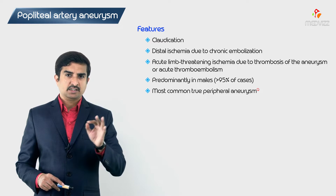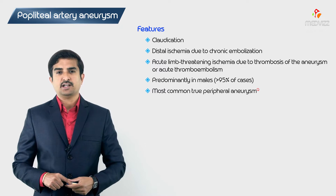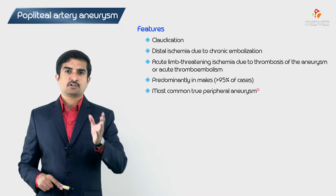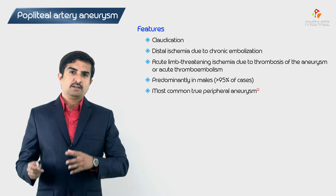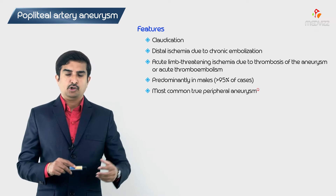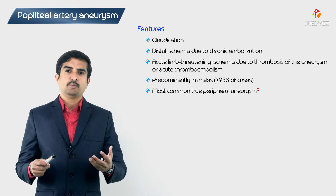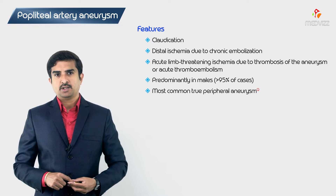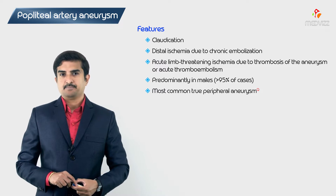For exam purposes: the most common peripheral artery aneurysm is the popliteal artery aneurysm. However, the most common true aneurysm overall is the abdominal aortic aneurysm, and the most common vascular aneurysm in general is also the abdominal aortic aneurysm.